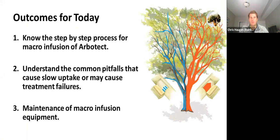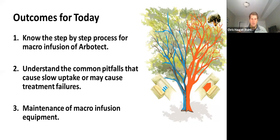Today we have three main outcomes. First, I want to give you a step-by-step process for macroinfusion with Arbitech — and many of these tree injection principles hold true across all tree injection methods. Tom mentioned several common pitfalls that can cause poor uptake or treatment failures, and we'll go through those step-by-step. The biggest difference we're touching on today is that bark beetles feed in bark cracks, so we need complete and even distribution of the fungicide throughout the entire canopy, which is why we recommend macroinfusion.